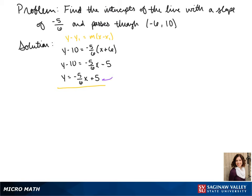So now we find our intercepts. Since our b value is our y-intercept we know that our y-intercept is 0, 5.